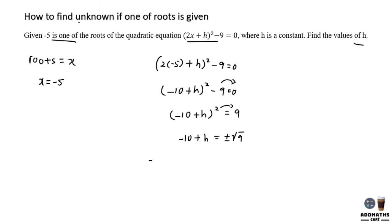So there will be two answers. Negative 10 plus h equals positive 3, or negative 10 plus h equals negative 3. So h will be equal to 13, and negative 10 plus h will be equal to 7.